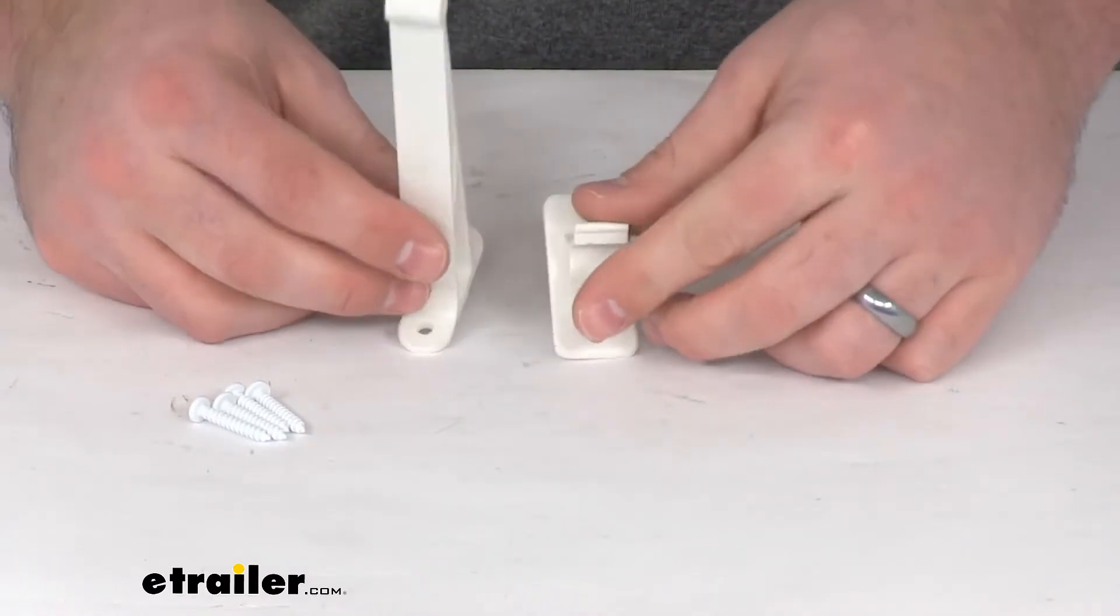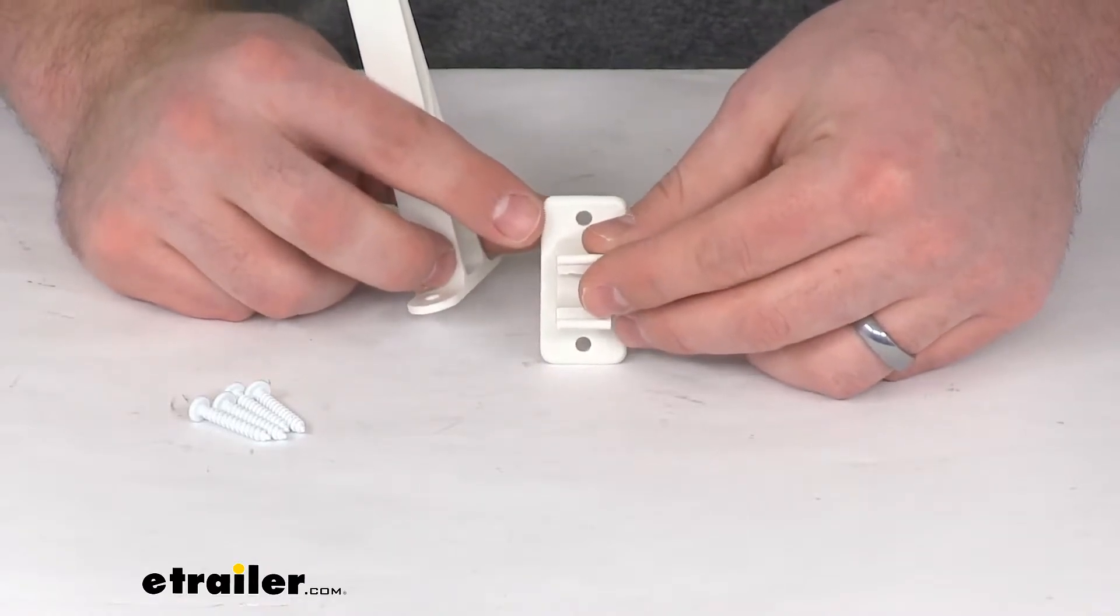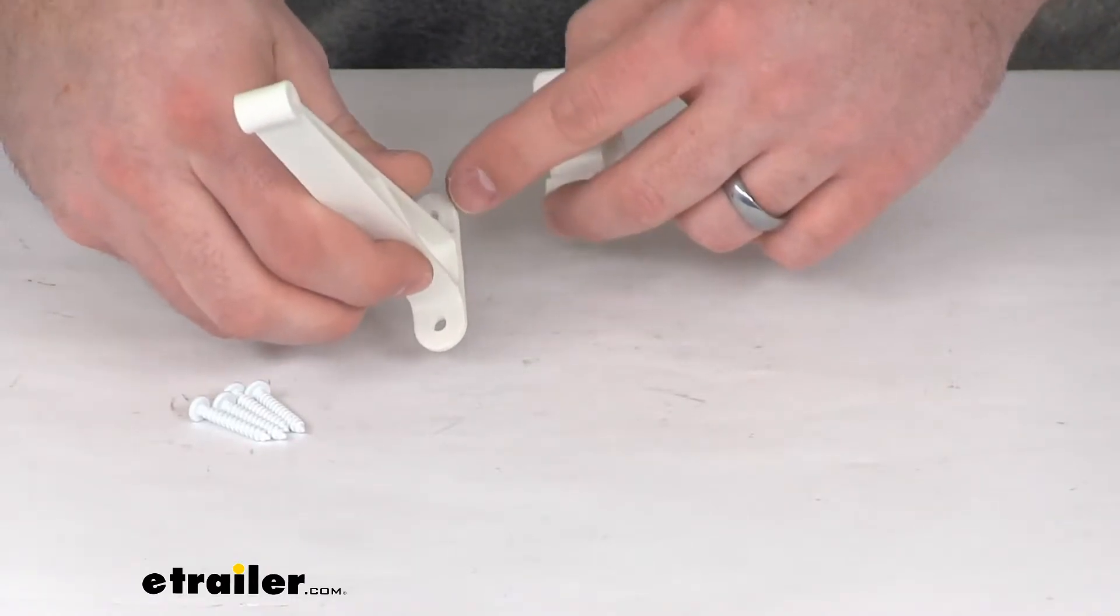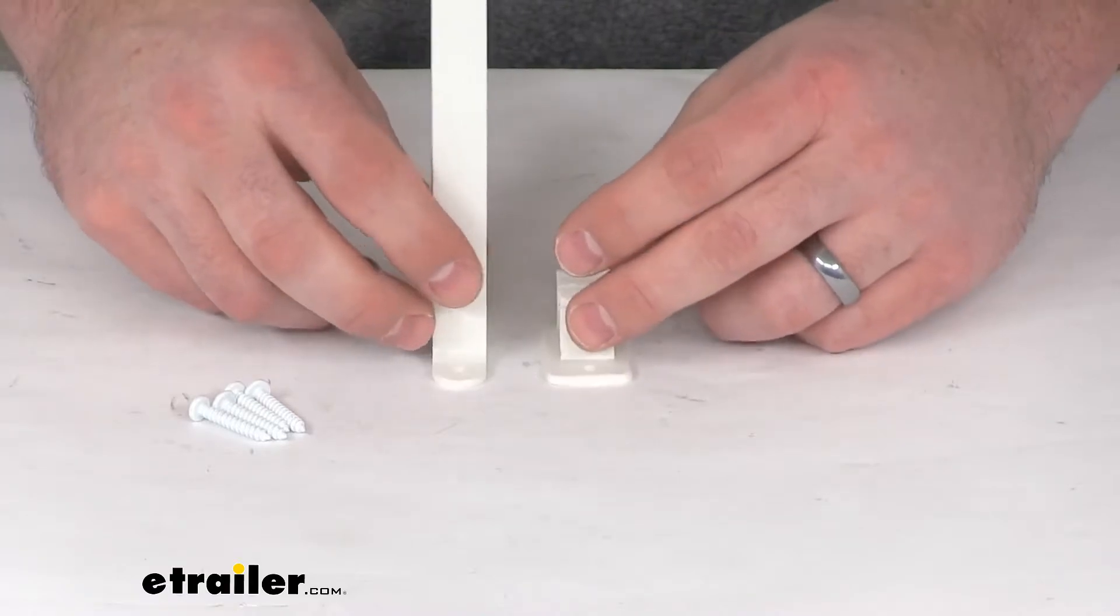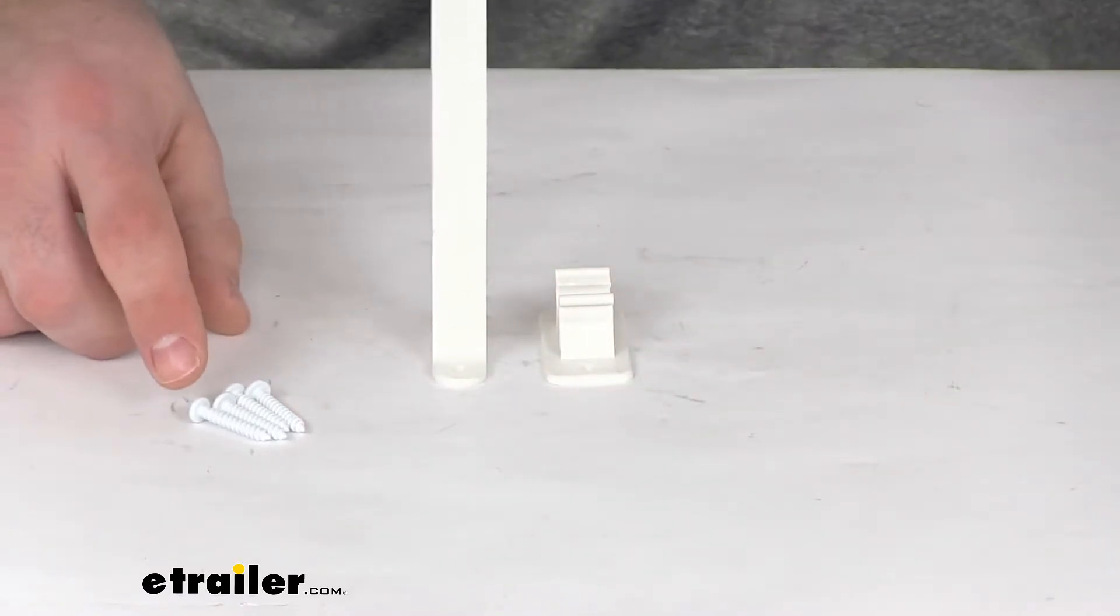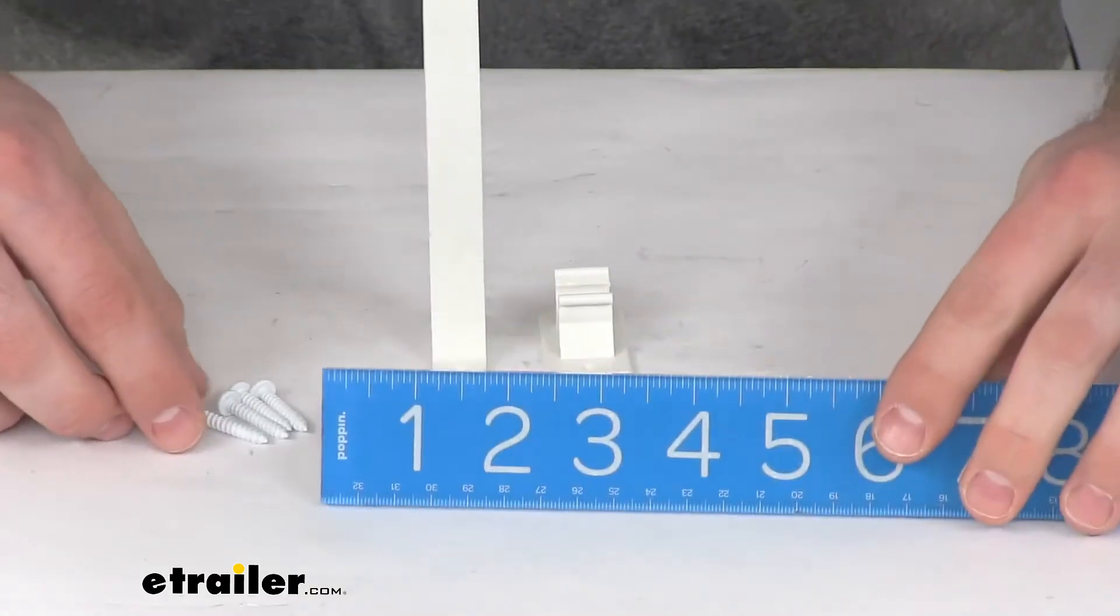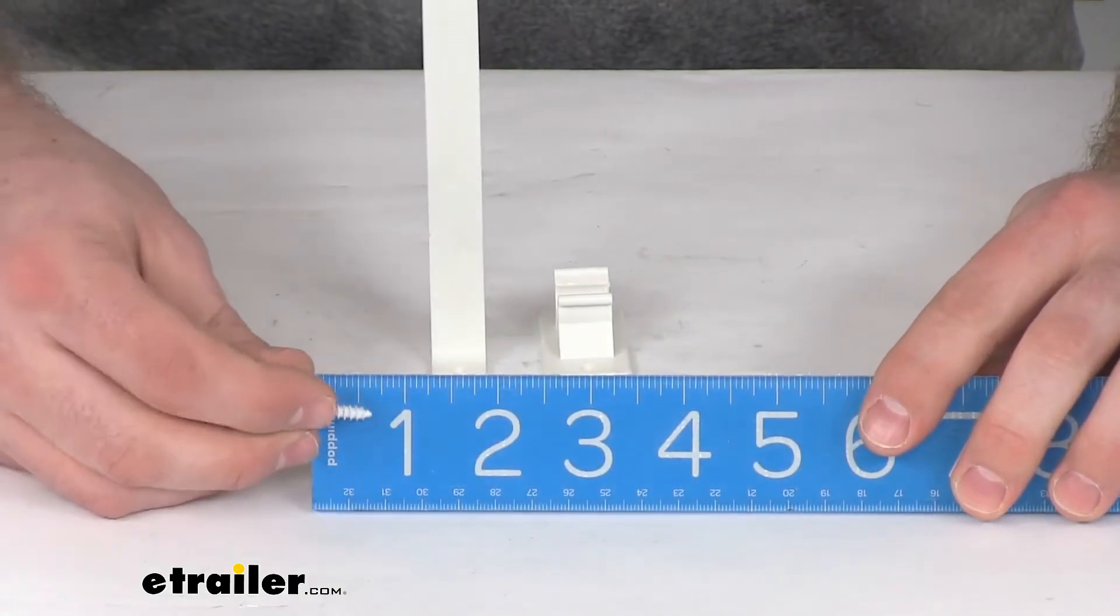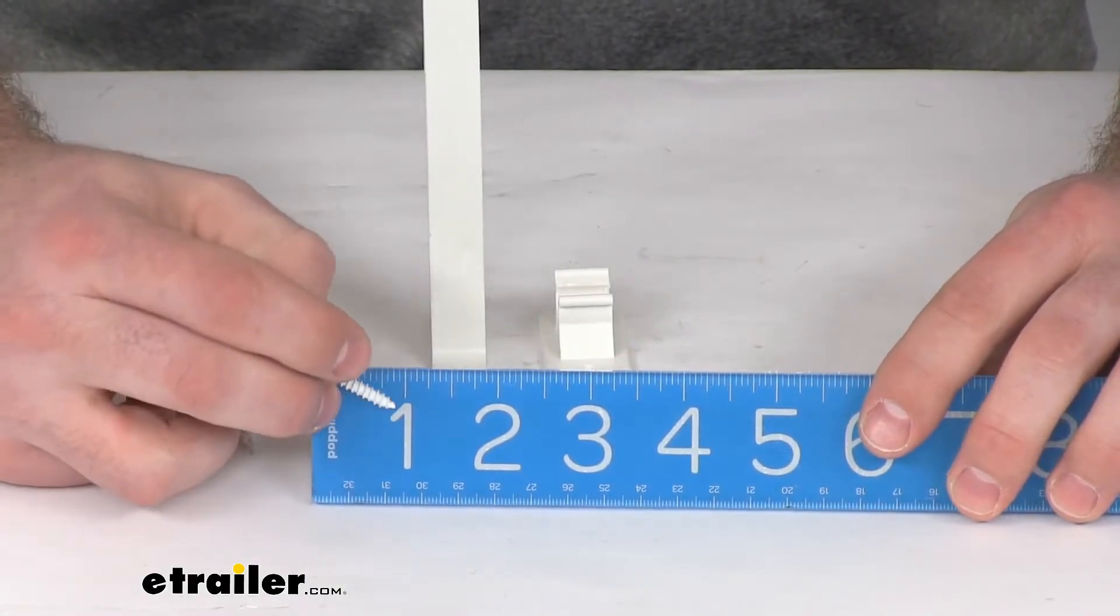We're going to have one mounting point on the bottom, one mounting point on the top of both of our brackets here. We get four mounting screws included in our kit, and these mounting screws are right about one inch in length.